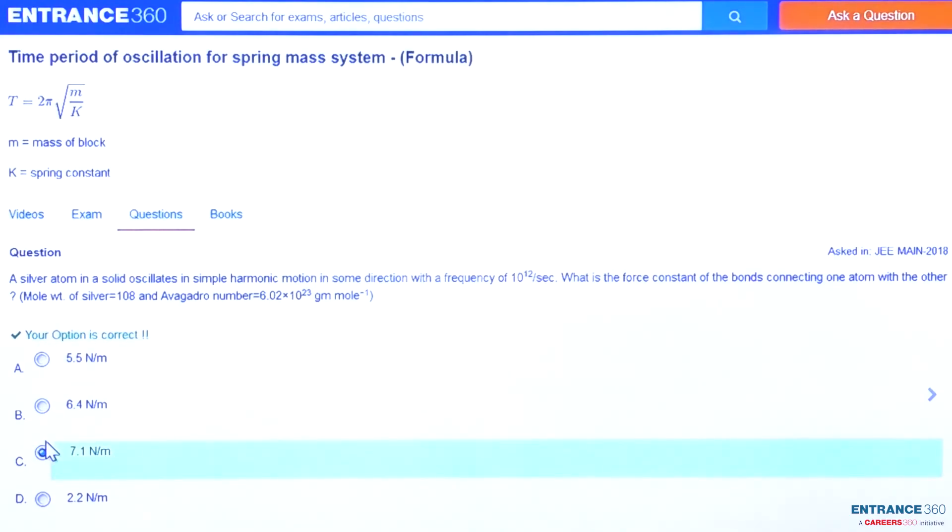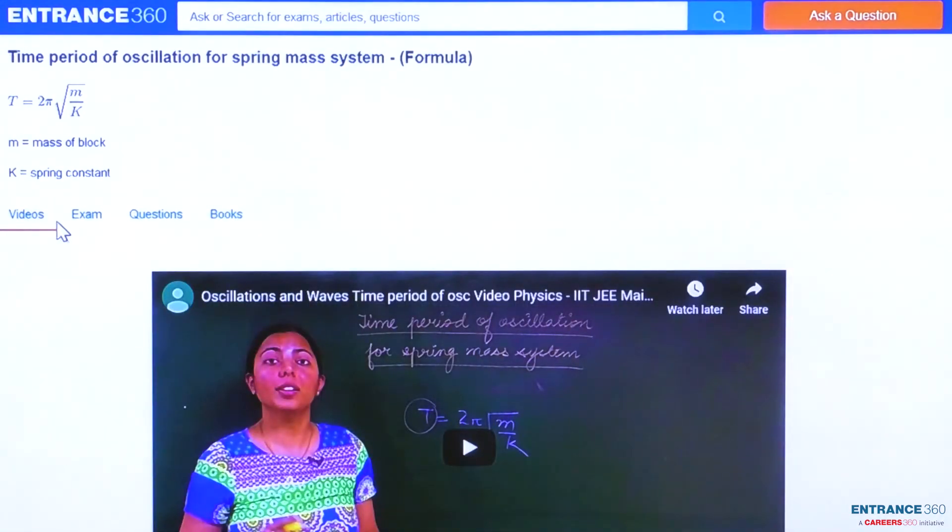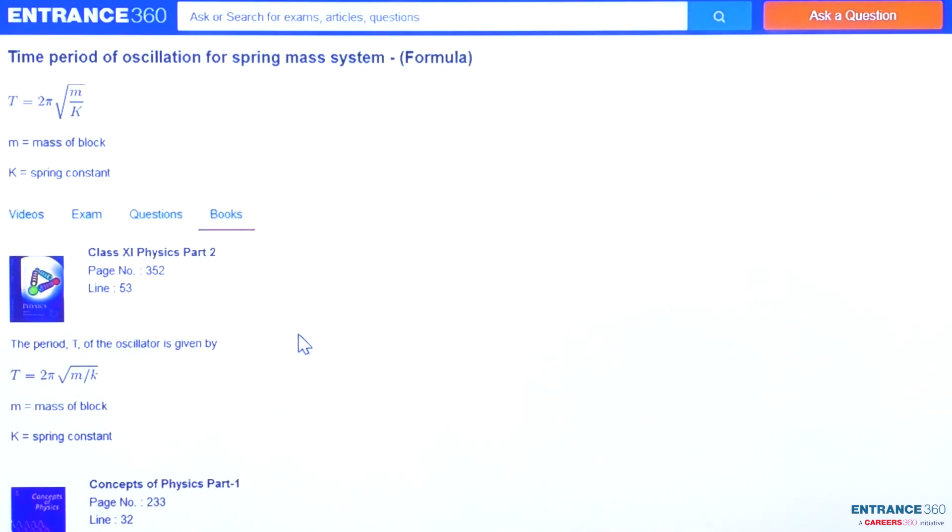To know more about the concept of time period of oscillation of a spring mass system you can watch the video here which is of small duration, and you can go through the books class 11 physics part 2 NCERT page number 352 line number 53, and concept of physics part 1 by H.C. Varma page number 233 line number 32. Thank you.